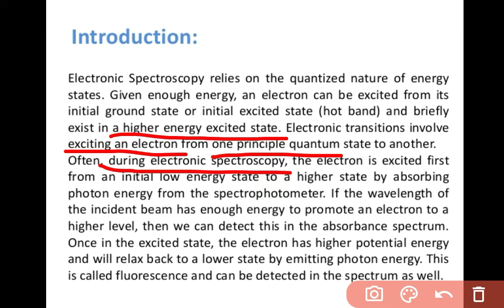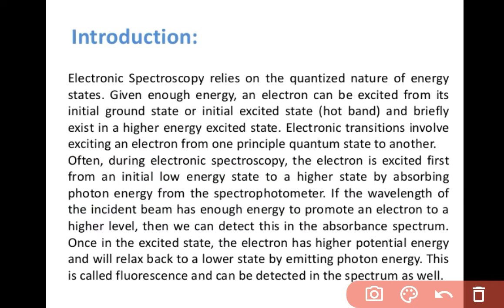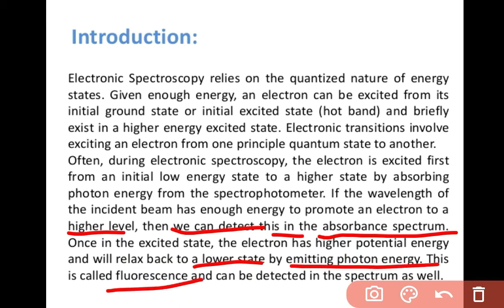Often during electronic spectroscopy, the electron is first excited from an initial low energy state to a higher energy state by absorbing photon energy from the spectrophotometer. If the wavelength of the incident beam has enough energy to promote an electron to a higher level, we can detect this in the absorbance spectrum. Once in the excited state, the electron has higher potential energy and will relax back to a lower state by emitting photon energy — this is called fluorescence and can be detected in the spectrum as well.